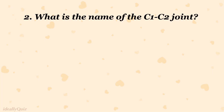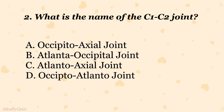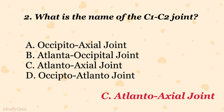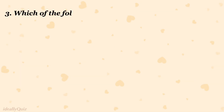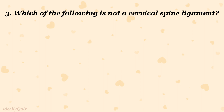What is the name of the C1-C2 joint? A. Occipitoaxial joint, B. Atlanto-occipital joint, C. Atlanto-axial joint, D. Ospitoatlanto joint. The correct answer is C. Atlanto-axial joint.